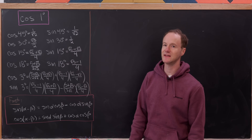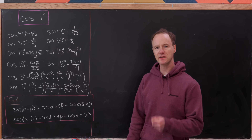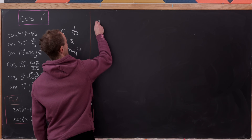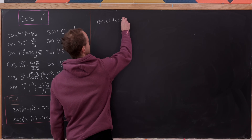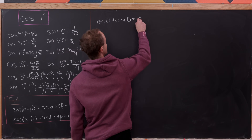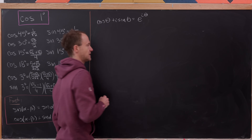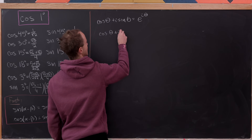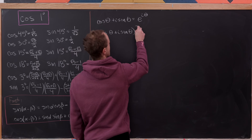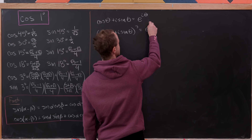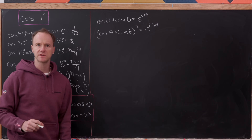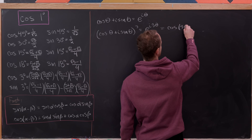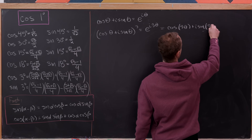The last tool we need is a triple angle formula. Recall Euler's formula: cosine theta plus i times sine theta equals e to the i theta. Cubing both sides gives cosine theta plus i sine theta, all cubed, equals e to the i 3 theta. The right-hand side expands as cosine 3 theta plus i times sine of 3 theta.